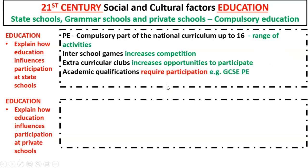Academic qualifications can also increase participation. For example, GCSE PE requires participation for your final grade — a percentage of your mark is directly linked to participation, which of course increases it. Additionally, school-club links mean schools have direct connections to local clubs, encouraging further participation after school finishes.